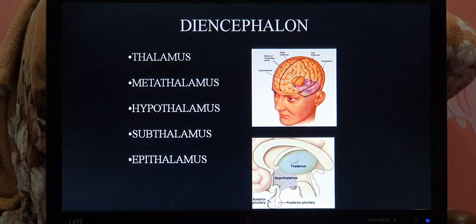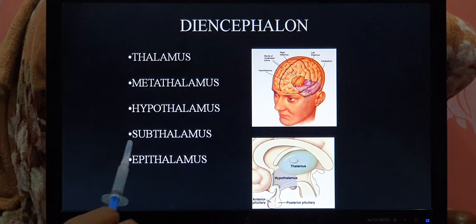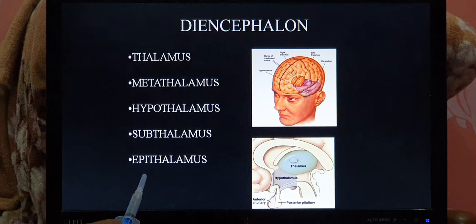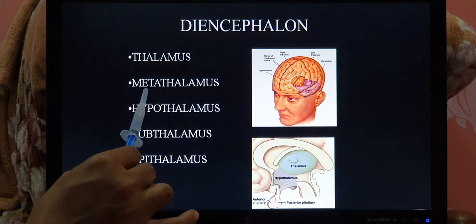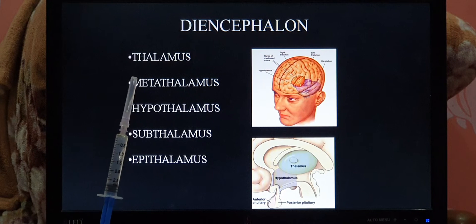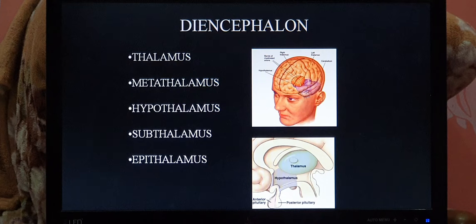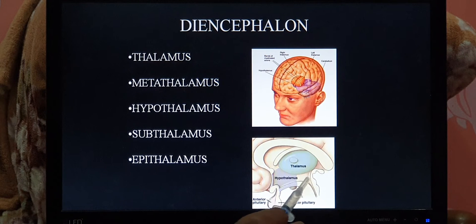The metathalamus includes the pituitary gland and the medial and lateral geniculate bodies. The epithalamus includes the pineal gland and habenular nucleus — the pineal gland is mainly related to the biological clock. The subthalamus is a small gray matter piece situated between the superior part of the midbrain and the inferior part of the thalamus.